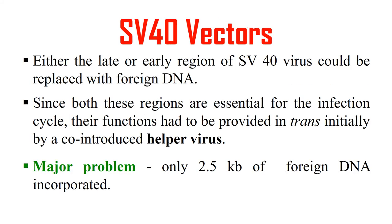For SV40 vectors, generally the late or early region of the SV40 virus is replaced by the foreign DNA we want to transfer inside the cells. Since both these regions are essential for infection, their function is provided by the helper virus. In one virus, we replace the late or early region with the DNA of interest, and the helper virus — co-introduced with this viral vector — provides those essential regions. The major problem is that only about 2.5 KB of foreign DNA can be transferred using these vectors, so the size limit is very small.